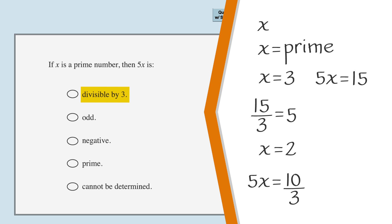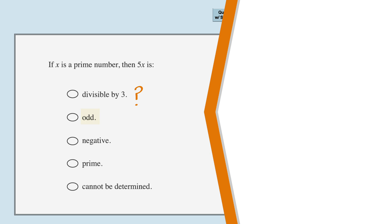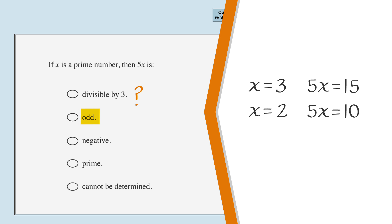Then 5x equals 10. 10 is not divisible by 3, so the first option is sometimes correct, but not always. Next, let's test the second answer choice. Again, 5x could be odd if we choose x equals 3. On the other hand, we already saw that when x equals 2, 5x equals 10. 10 is not odd, so the second answer is not always correct.